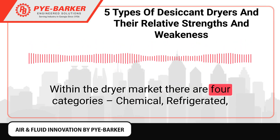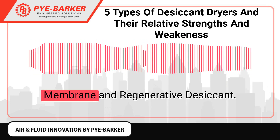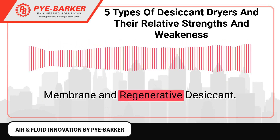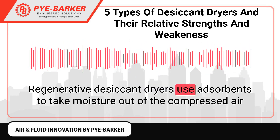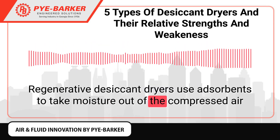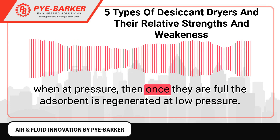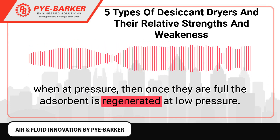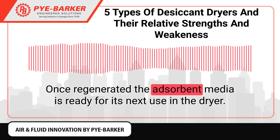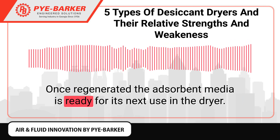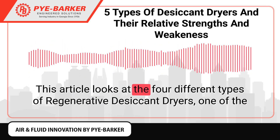Within the dryer market there are four categories: chemical, refrigerated, membrane, and regenerative desiccant. Regenerative desiccant dryers use adsorbents to take moisture out of the compressed air when at pressure, then once they are full the adsorbent is regenerated at low pressure. Once regenerated, the adsorbent media is ready for its next use in the dryer.